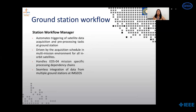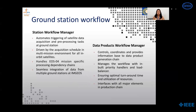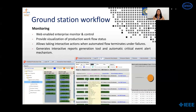The next element is the Data Products Workflow Manager. It is a workflow automation software that controls and provides the information base to manage the entire data product generation chain, with its inbuilt priority handlers and load balancers. It ensures optimal turnaround time and utilization of resources. Monitoring for both these workflows is done by the Enterprise Event Monitor and Control in the ground station multi-mission environment. It provides visualization of product workflow status and facilitates corrective action in case of automatic process failures.